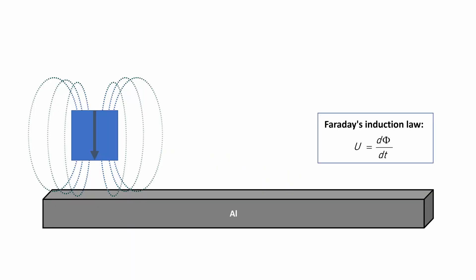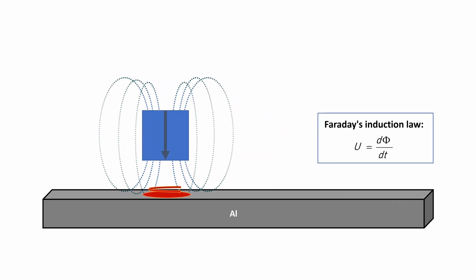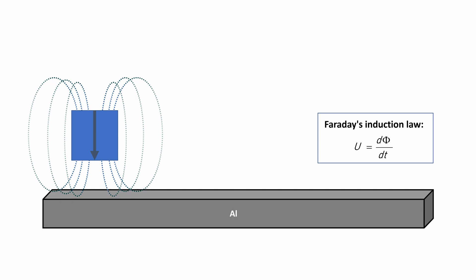Let's take a closer look at the whole thing. We again take our magnet and move our magnetic field over the aluminum plate. According to the Faraday Induction Law, we now induce eddy currents in the material.